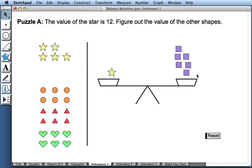And since star has a value of 12, that means each square must have a value of 2. Repeating this for the other shapes allows us to figure out their values as well.